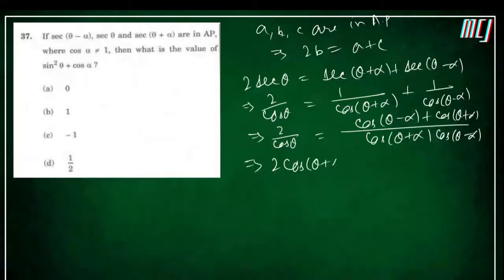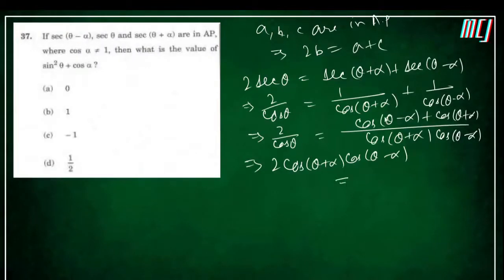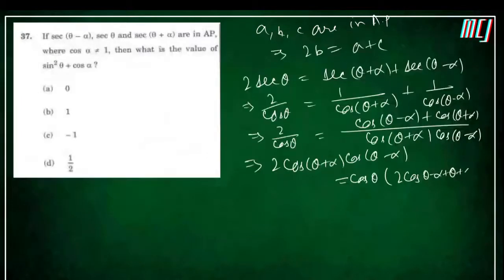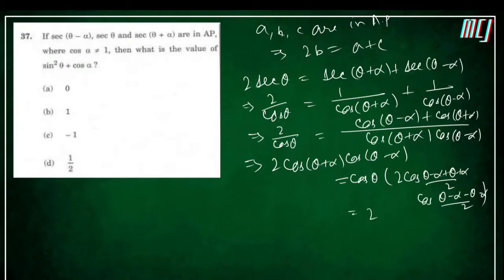Cross-multiplying: 2·cos(θ + α)·cos(θ − α) = cosθ·[cos(θ − α) + cos(θ + α)]. Applying the sum-to-product formula for cos A + cos B = 2cos((A+B)/2)cos((A−B)/2), the right side becomes cosθ · 2cosθ·cosα.